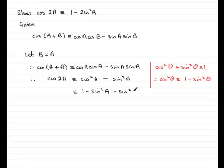And you should be able to see now that we're basically almost there. Because what we have is 1 and minus sine squared A minus another sine squared A is minus 2 sine squared A. And that's what we had to show.